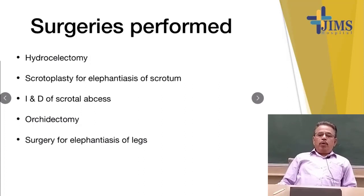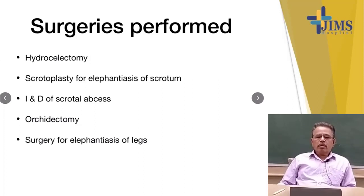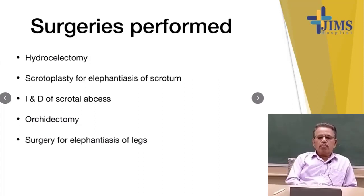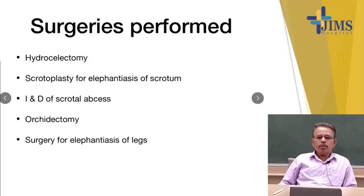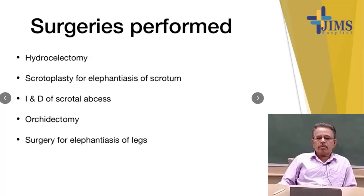Surgeries in filariasis: first is hydrocelectomy for patients with hydrocele. If the scrotum is huge, scrotoplasty is done for elephantiasis of the scrotum. Incision and drainage of scrotal abscess. If the testis is involved, orchidectomy is performed. For elephantiasis of the leg, there are many types of surgery depending on whether the disease is chronic and of long duration — if there is huge elephantiasis of long duration, the outcome will be poor.